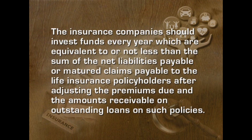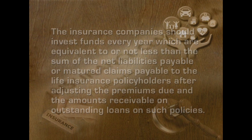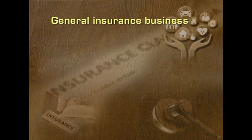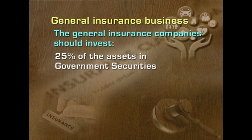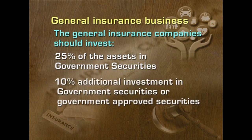The insurance companies should invest funds every year which are equivalent to or not less than the sum of net liabilities payable or matured claims payable to the life insurance policyholders, after adjusting the premiums due and amounts receivable on outstanding loans on such policies. In case of general insurance business, the general insurance companies should invest 25% of the assets in government securities and 10% additional investment in government securities or government approved securities, and leftover amounts may be invested in other approved securities as per IRDA prudential norms. All securities invested by the insurance company should be free from encumbrances, charges, hypothecation or lien.